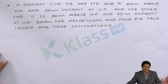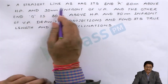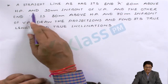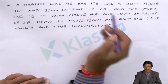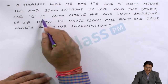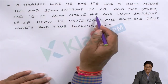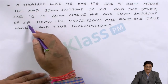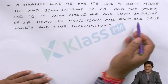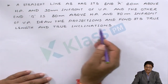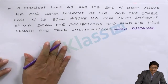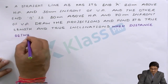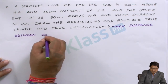I will read the problem, listen carefully. A straight line AB has its end A 20 mm above the HP and 30 mm in front of the VP. And the other end B is 80 mm above the HP and 70 mm in front of the VP. Draw the projections and find its true length and true inclination — distance between end projectors.